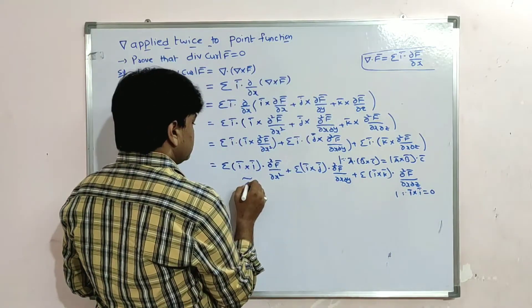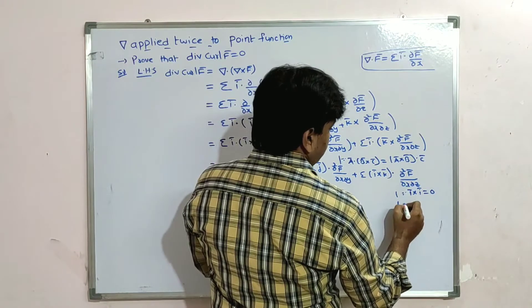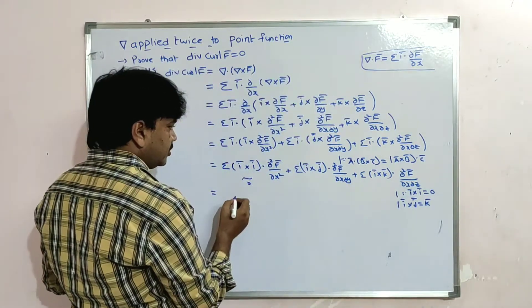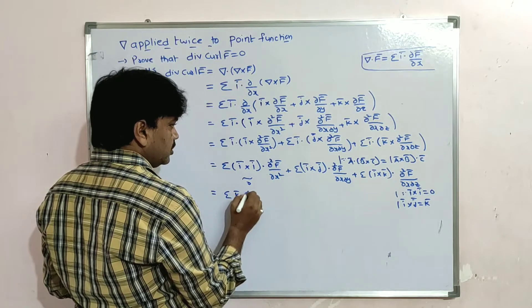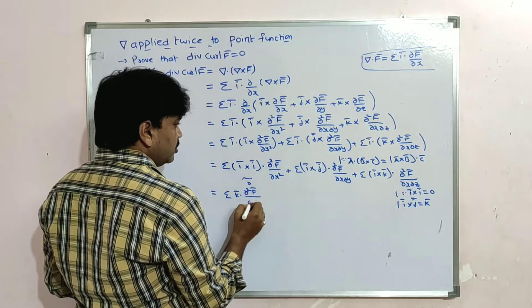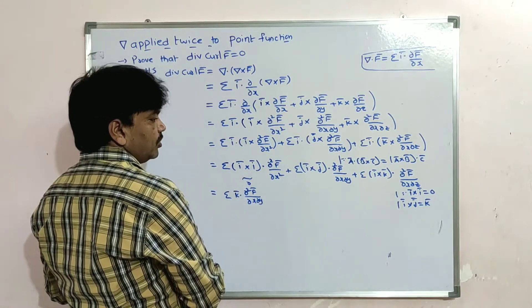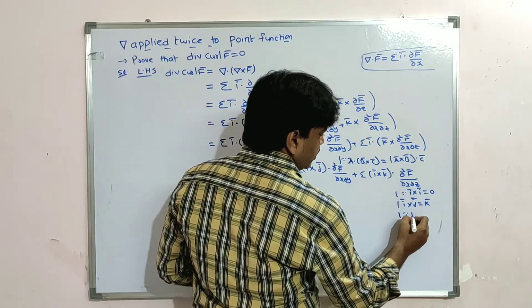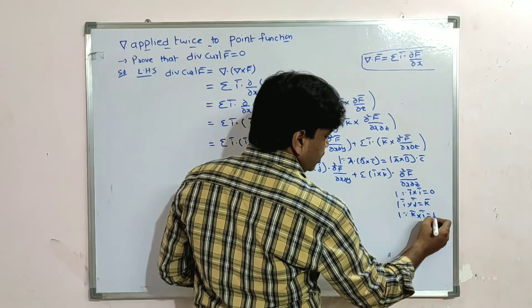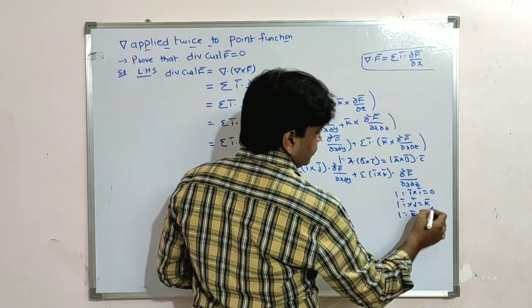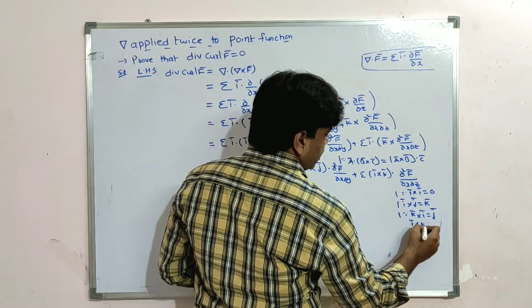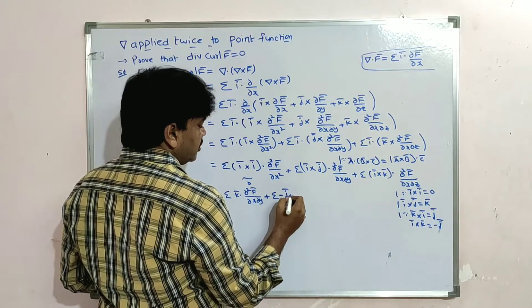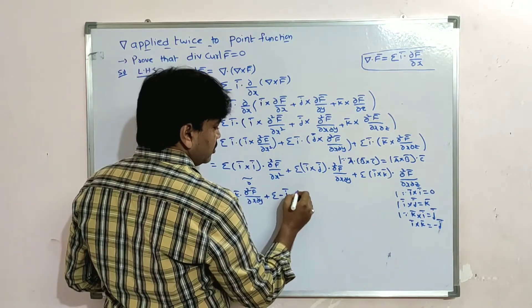We know i̅ cross i̅ = 0, so the first term is zero. i̅ cross j̅ = k̅, so we get sigma k̅ dot (∂²F̄/∂x∂y). For i̅ cross k̅: note k̅ cross i̅ = j̅, but i̅ cross k̅ = -j̅. So we get minus j̅ dot (∂²F̄/∂x∂z).